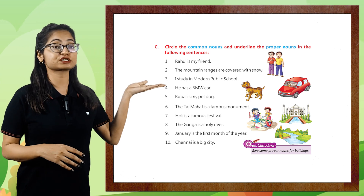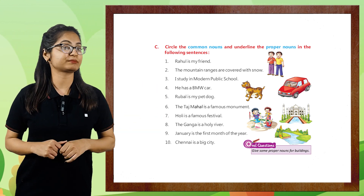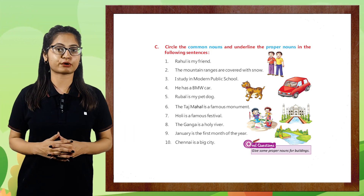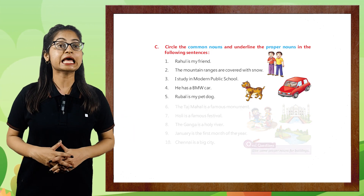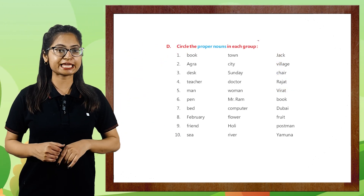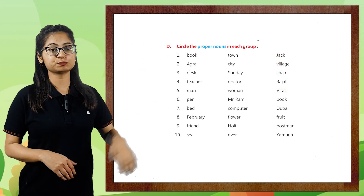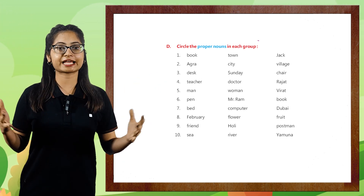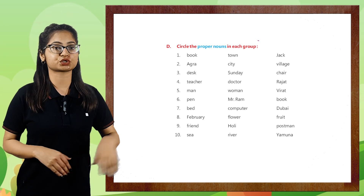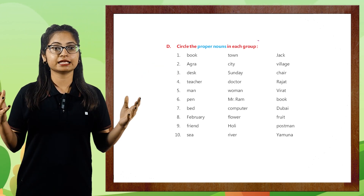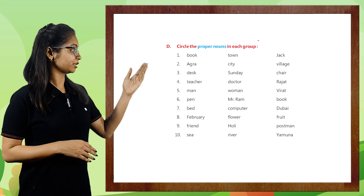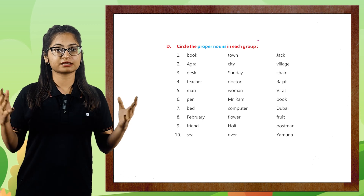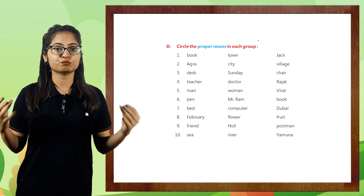Let me ask you one oral question now — give some proper nouns for buildings. Next, circle the proper noun in each group. Look at these groups: 'book, town, Jack' — you will circle Jack. Next: 'Agra, city, village' — you will circle Agra. Next: 'desk, Sunday, chair' — you will circle Sunday. Next: 'teacher, doctor, Rajat' — Rajat is a proper noun.